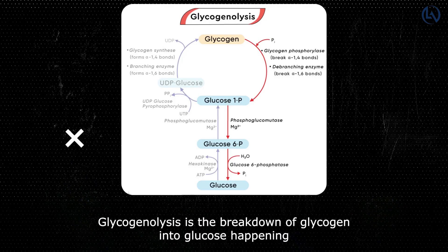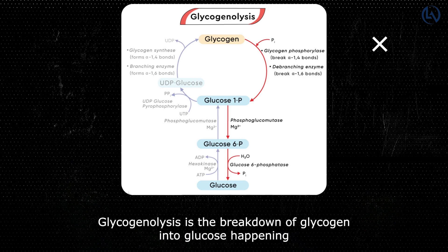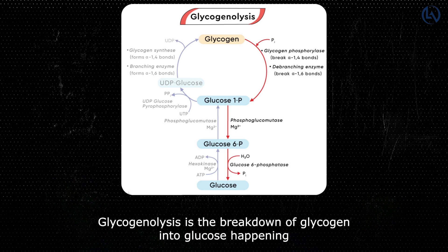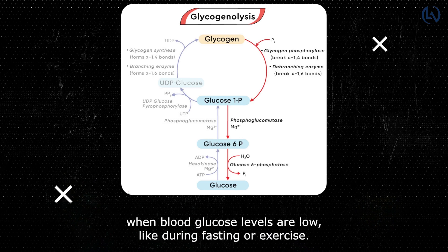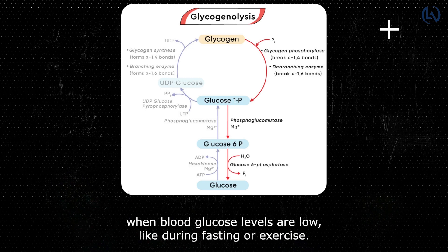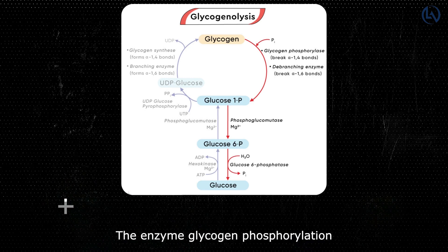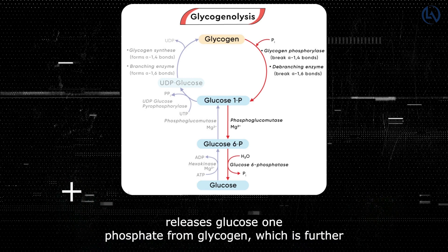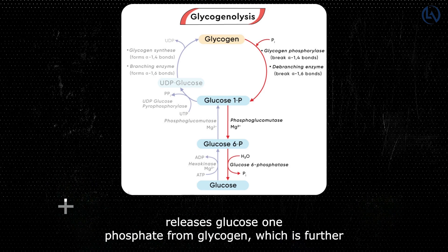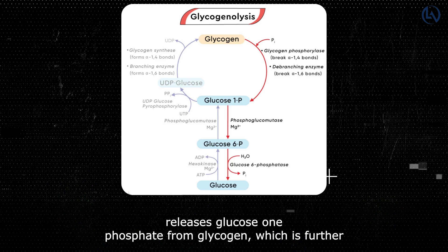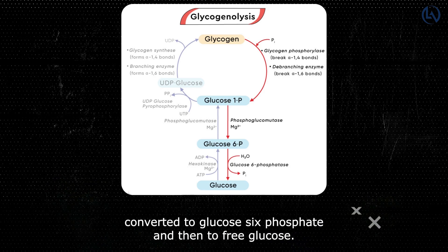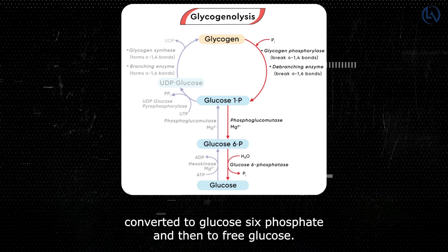Glycogenolysis is the breakdown of glycogen into glucose, happening when blood glucose levels are low, such as during fasting or exercise. The enzyme glycogen phosphorylase releases glucose-1-phosphate from glycogen, which is further converted to glucose-6-phosphate and then to free glucose.